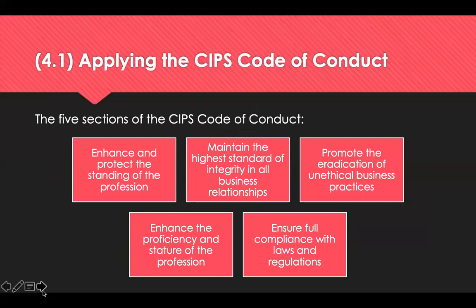The CIPS code of conduct outlines the actions and behaviours that CIPS members are expected to follow. The five sections of the code firstly ask you to enhance and protect the standard of the profession — by never engaging in activity that could bring the Institute into disrepute, including not accepting gifts and hospitality. It also asks you to maintain high standards of integrity in all business relationships, so you need to reject anything that seems improper.